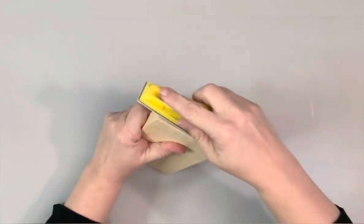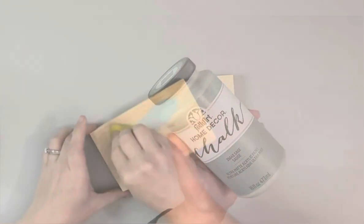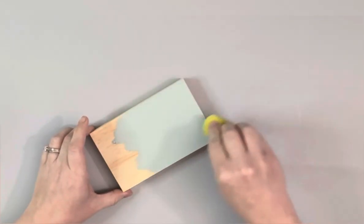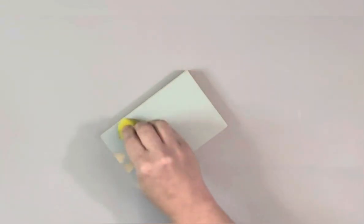I started by sanding down the piece of wood. I used sage chalk paint by Folk Art to paint that using a craft sponge to apply the paint.